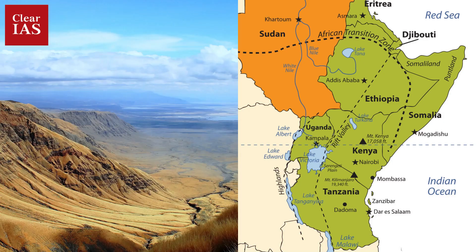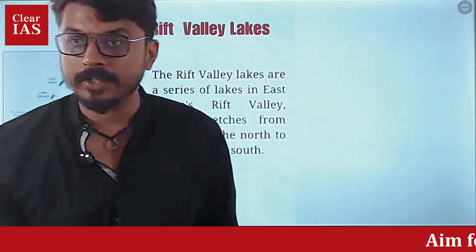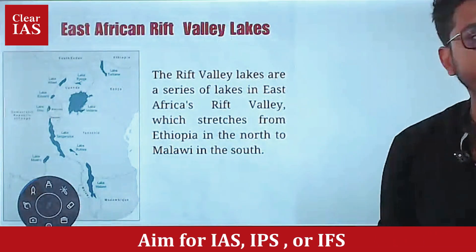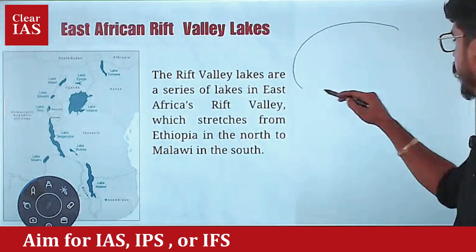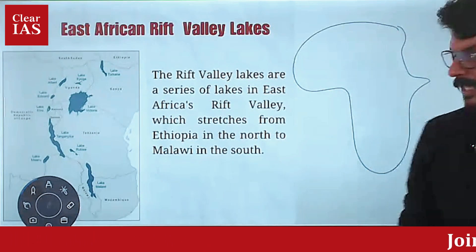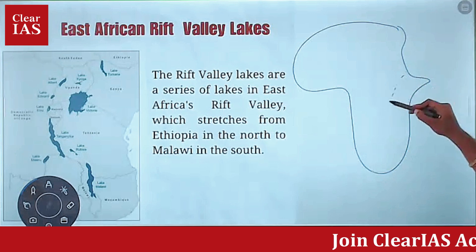East African Rift Valley. We have learned about the East African Rift Valley. Can anybody tell me why is the East African Rift Valley formed? Due to divergence. And what kind of divergence is this? Continental-continental divergence — it is an example of continental-continental divergence.